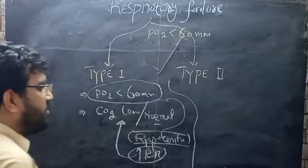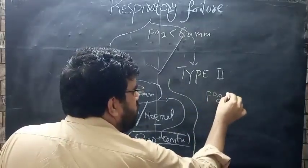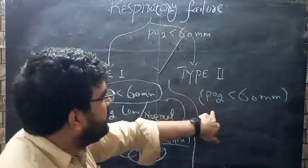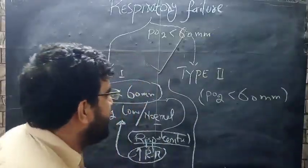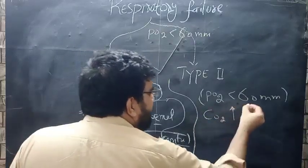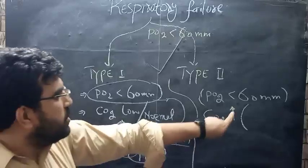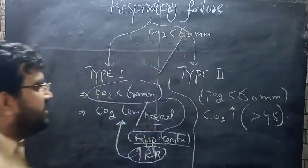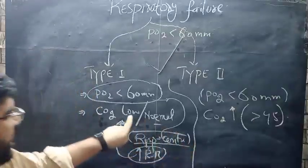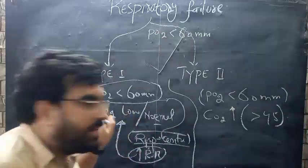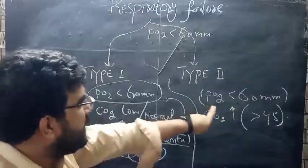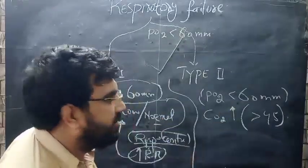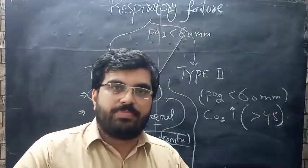Now, Type 2 respiratory failure is defined as PO2 less than 60 mmHg — this must still be less than 60. However, in Type 2, the CO2 is high — more than 45 mmHg. This elevated CO2 is the distinguishing criterion for Type 2 respiratory failure.